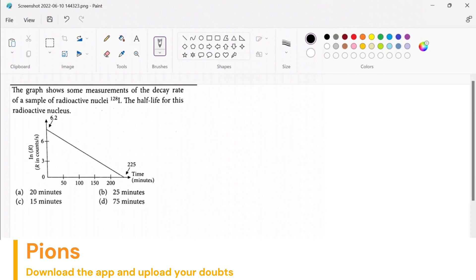Half-life is the time in which the number of nuclei in a given sample reduces to half of its original value. So if Iridium with mass number 128 is undergoing decay according to this graph, then you have to figure out the half-life.